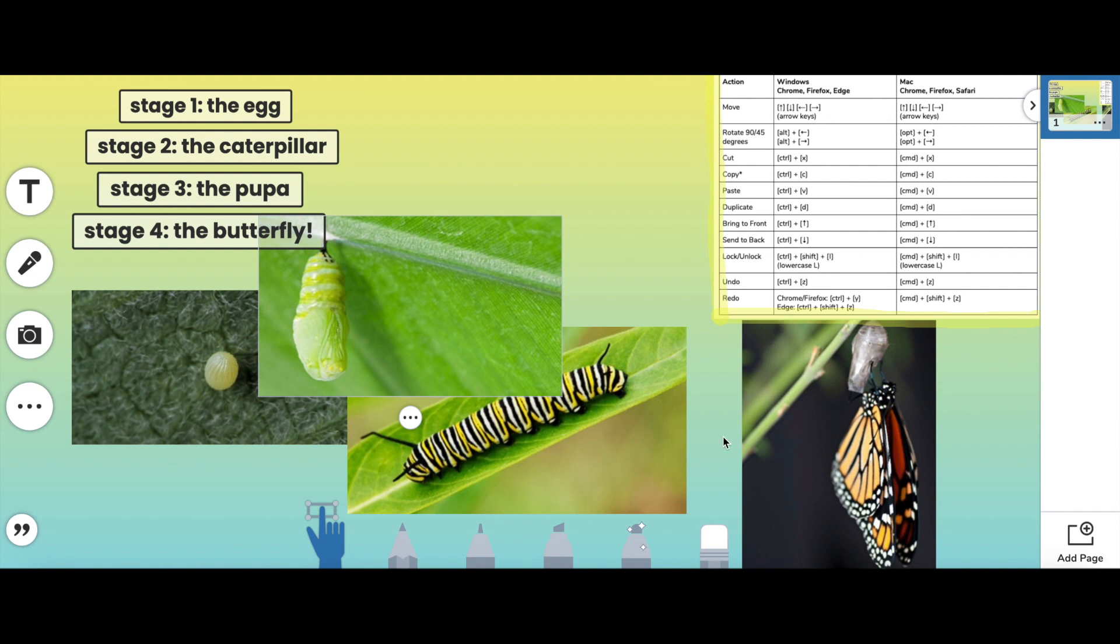I am building out a butterfly lifecycle and I want to move some things around. I want to make sure I've selected this hand tool here, and first I'm going to start with the egg, my stage one of the cycle.